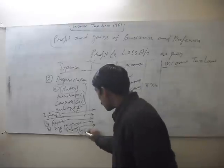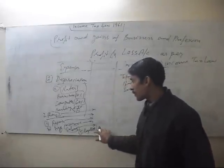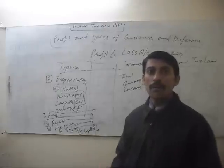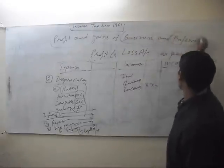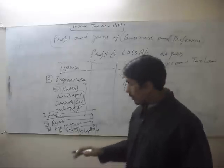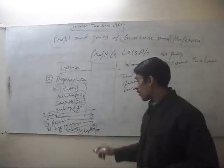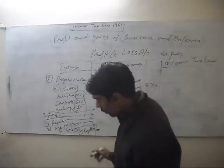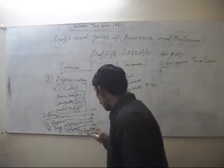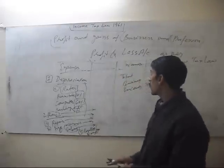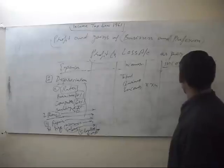Fifth is legal expenses. You can show the legal expenses which you have paid for protecting your business or profession. In this, you can add advocates' salary or other legal fees. And finally, other expenses — we will show all other expenses which are accepted as per Income Tax Law Section 28.